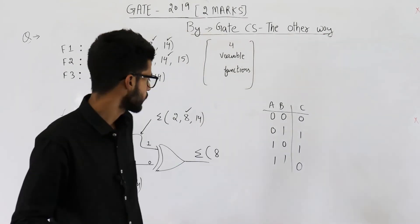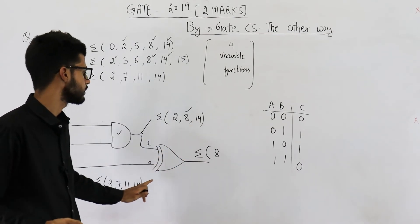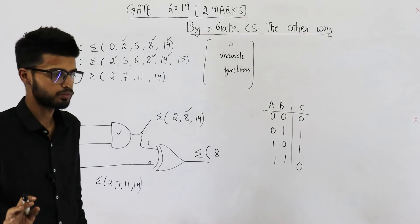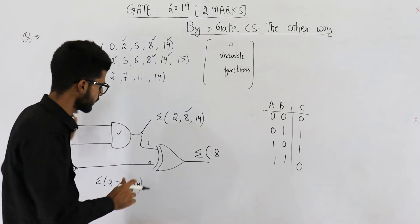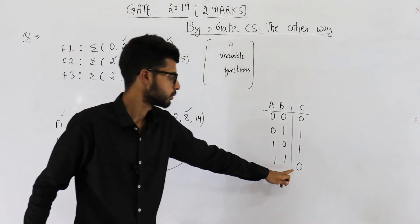So let's see what will happen in case of 14. 14 is here as well as here. So output will be 0 on 14 because on 14 this will be 1 as well as this will also be 1, and 1 XOR 1 is 0.